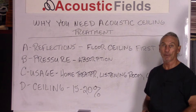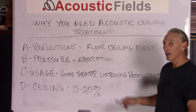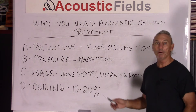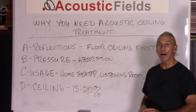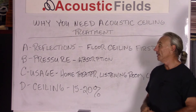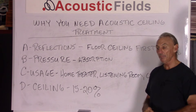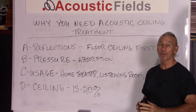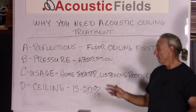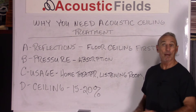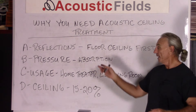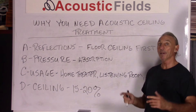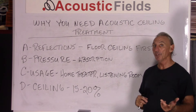Middle and high frequency reflection management need to be addressed also. What are our options for ceiling treatment? We have diffusion and absorption — those are really our two choices. We can have low frequency absorption with middle and high frequency absorption, or we can have low frequency absorption with middle and high frequency diffusion.